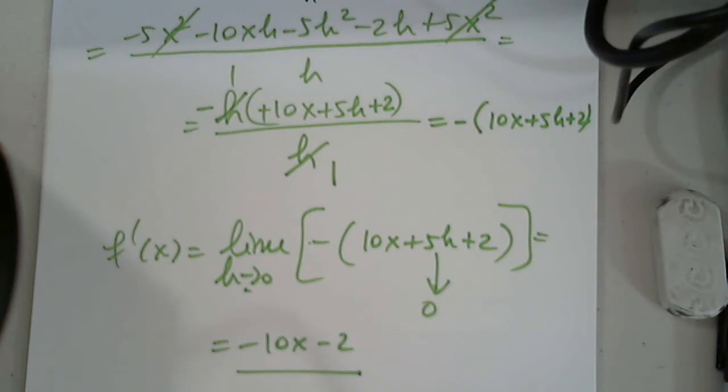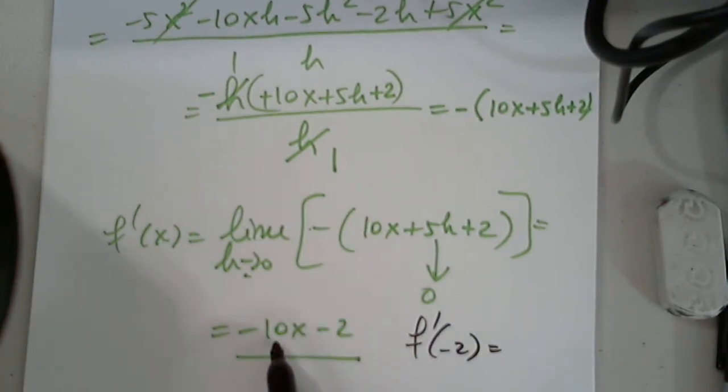Now, part D here, it's asking you to also plug in some numbers. That's fine. You can plug in anything that you want. F prime of, they say, negative 2. No problem. Negative 2 times negative 10, 20 minus 2 is 18. And so on and so forth.